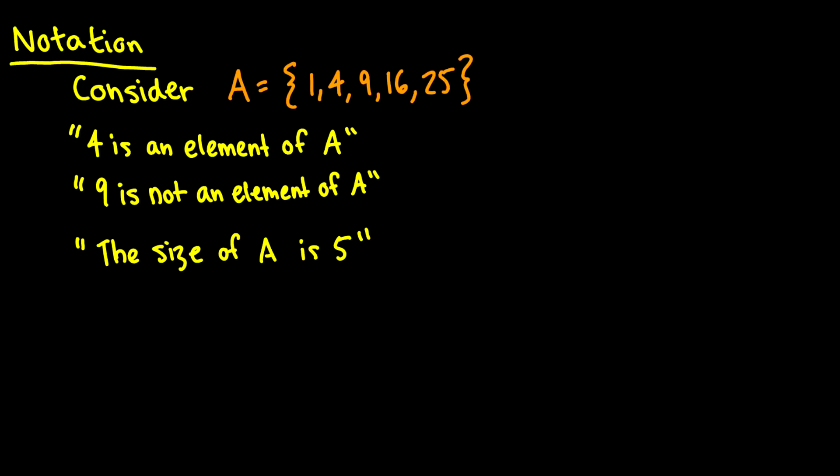So to say some object is an element, specifically if we say 4 is an element of A, we write down 4, and this is an epsilon symbol in Greek, and then we say A.